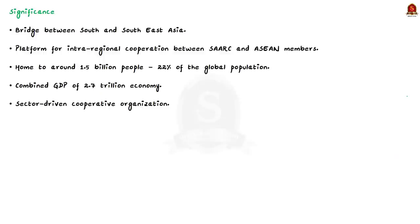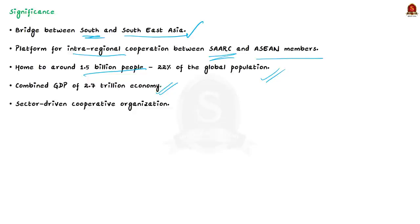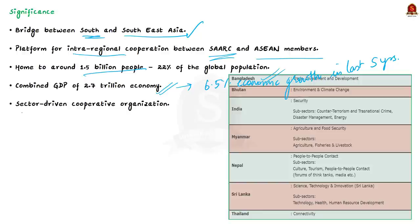What makes BIMSTEC special? This regional group constitutes a bridge between South Asia and Southeast Asia. It has established a platform for intra-regional cooperation between SAARC members and ASEAN members. The BIMSTEC region is home to around 1.5 billion people, constituting around 22% of the global population, with a combined GDP of 2.7 trillion. In the last five years, BIMSTEC member states have sustained an average 6.5% economic growth trajectory despite global financial meltdown.